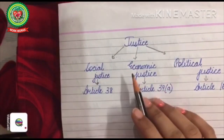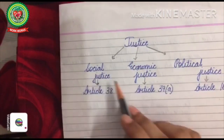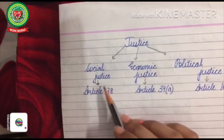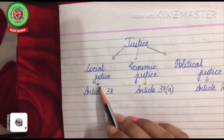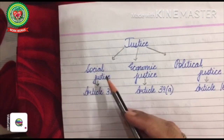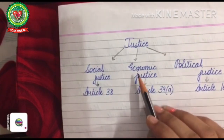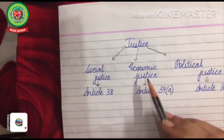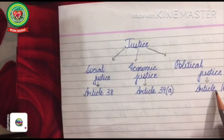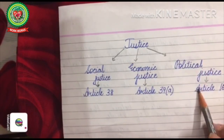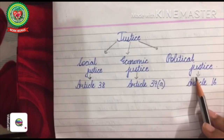Let's start with justice. The Preamble declares justice to all citizens of India. It is a very wide concept. Justice includes social justice, economic justice, and political justice. Article 38 declares social justice — all citizens should be treated equally irrespective of birth, caste, color, or religion. Article 39A declares economic justice, implying that efforts should be made to bridge the gap between the rich and the poor. Article 16 states political justice — all citizens have the right to participate in the political process of the country.